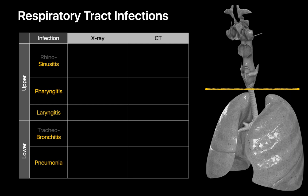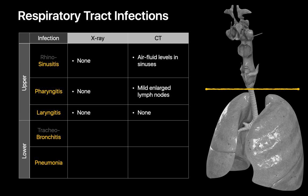Let's start with upper respiratory tract infections. We expect essentially no chest x-ray findings in patients with an upper respiratory tract infection. In patients with sinusitis, air-fluid levels may be present on CT images of the paranasal sinuses. In patients with pharyngitis, mildly enlarged cervical lymph nodes are the main potential CT finding, though this is pretty nonspecific prospectively speaking. Patients with laryngitis will generally have no perceptible imaging findings on CT.